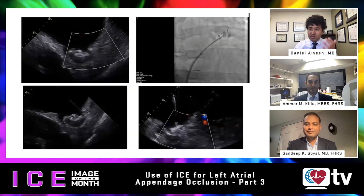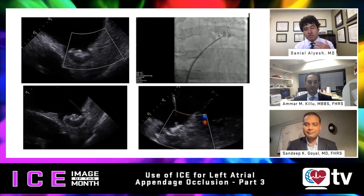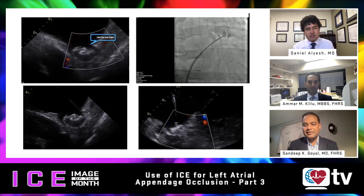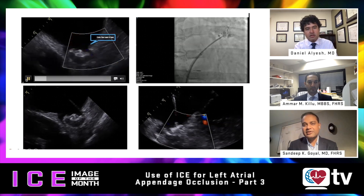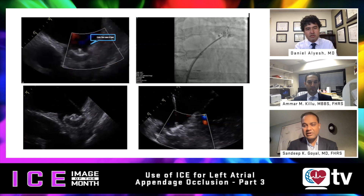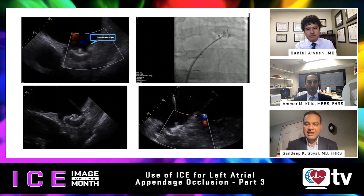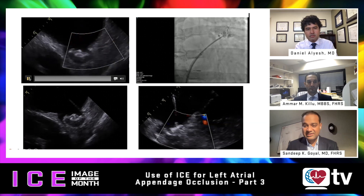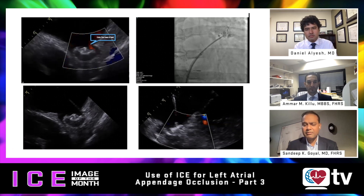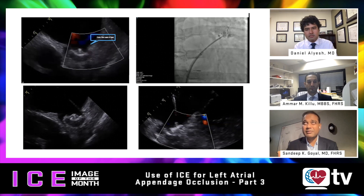We'll start with a prompt to Sandeep — a beautiful case where he identifies the leak on ICE as well as fluoro and then embolizes. This patient had a very trabeculated appendage and underwent a Watchman Flex device implant. At the time of implant we thought we had a one to two millimeter leak, but when they came back for post imaging the leak was bigger based on CT sizing — four or five millimeters — and that's too big.